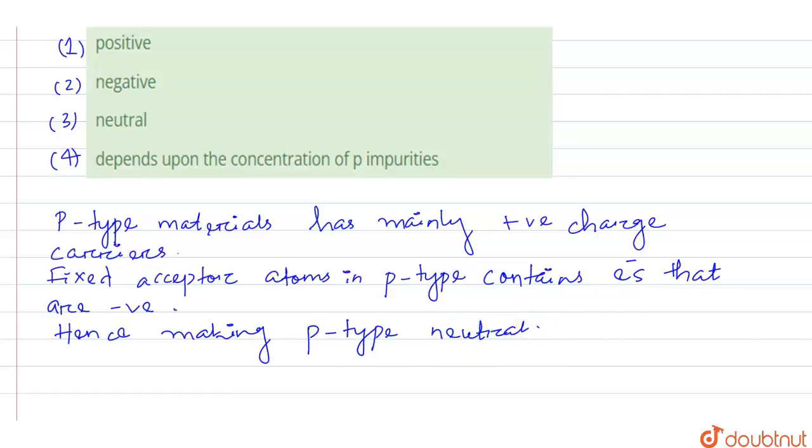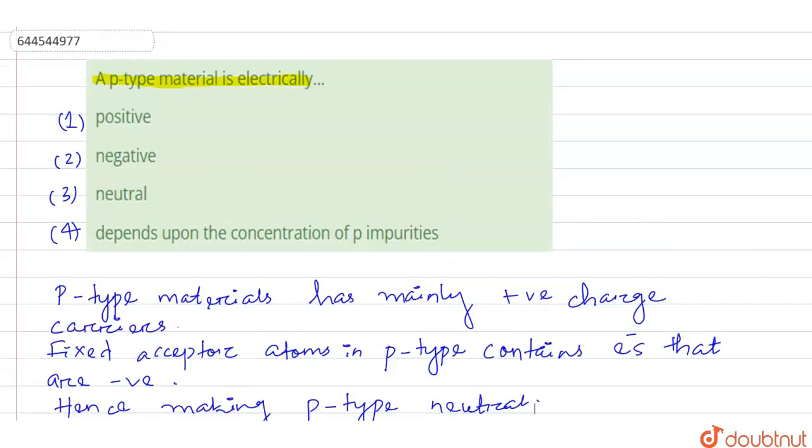That's why we say that p-type materials are electrically neutral.